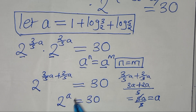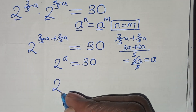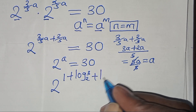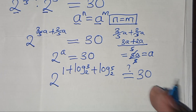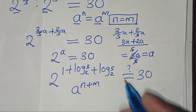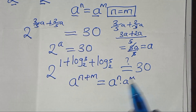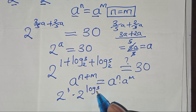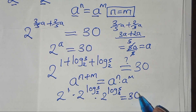Now a equals 1 plus log₂3 plus log₂5. So we have 2 to the power (1 plus log₂3 plus log₂5) equals 30. Since a to the power (n plus m) equals a to the power n times a to the power m, this becomes 2 to the power 1, times 2 to the power log₂3, times 2 to the power log₂5.